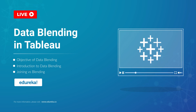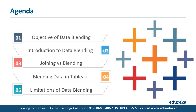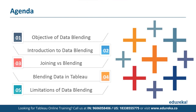Before we begin, let's discuss our agenda for today. First, we're going to talk about the objective of data blending. Then we're going to talk about what data blending essentially is and how it works in Tableau. Then we're going to discuss a concept called joining and see how it is different from data blending. Then we're going to see a short demo with a few simple steps, and finally we're going to discuss a few limitations in this process. So without much ado, let's get straight to the module.